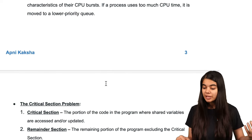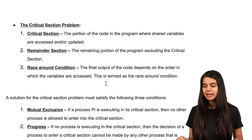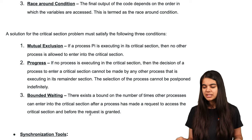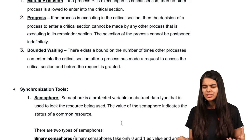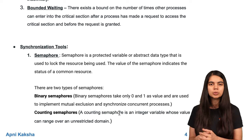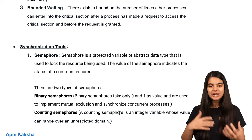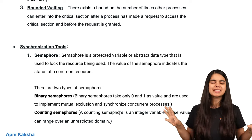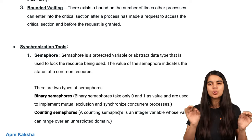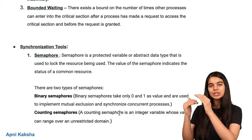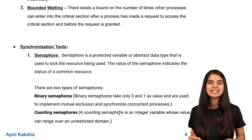When studying operating systems, we need to understand what is a critical section, what is mutual exclusion, and what is synchronization. When different processes are working simultaneously in the operating system, how do we maintain synchronization between them?